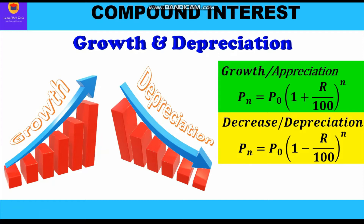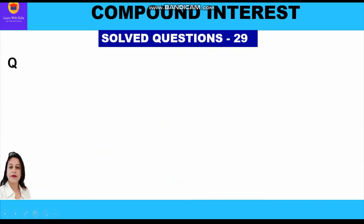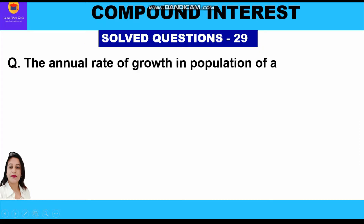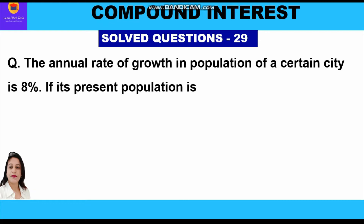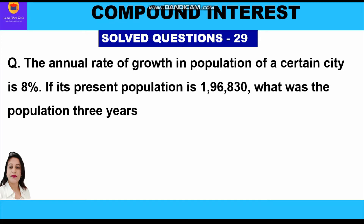Now let's go through the question. The annual rate of growth in population of a certain city is 8%. If its present population is 196,830, what was the population three years ago? The annual rate of growth is 8%, present population is 196,830, and we have to find the initial population three years ago.